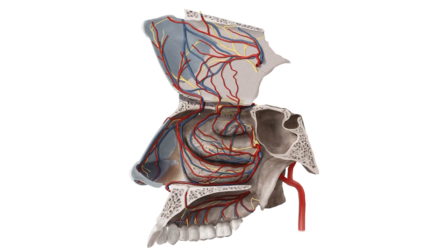Here we can see an illustration of the skull that's been bisected along the mid-sagittal plane to expose the vasculature and nerve supply of the nasal cavity. Here we can see the lateral wall of the right nasal cavity, and here we can see the medial wall which has been reflected upwards. Now this image does look overwhelming, but don't panic because as we progress through the tutorial, we're going to break it down into individual structures.